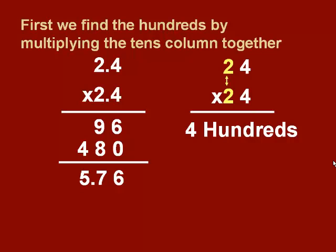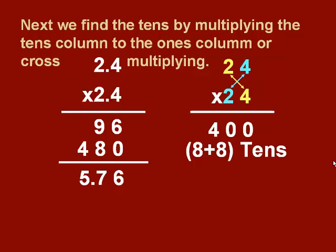Now, to come up with the number of tens, we need to multiply both ones columns by both tens columns. So we do what I like to call cross-multiplying. We multiply 4 times 2 and 2 times 4, which gives us 8 plus 8, or 16 tens.